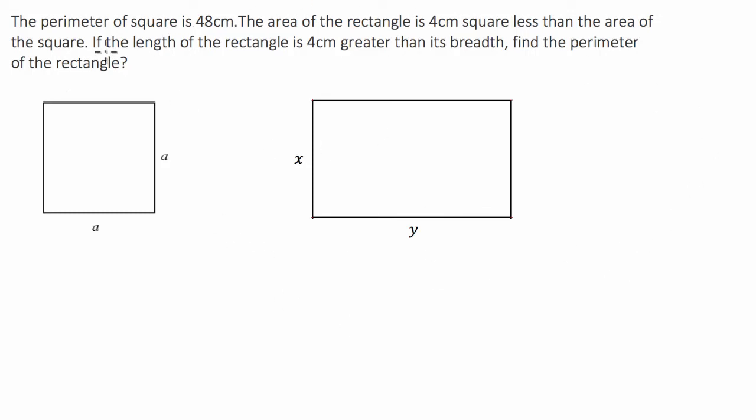G'day guys, I've got an algebra question today where we've got two shapes, a square and a rectangle. We've got the perimeter of the square is 48 centimeters. The area of the rectangle is 4 centimeters squared less than the area of the square. If the length of the rectangle is 4 centimeters greater than the breadth, find the perimeter of the rectangle.